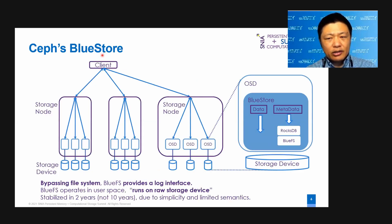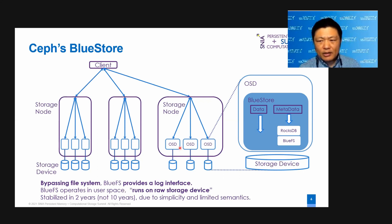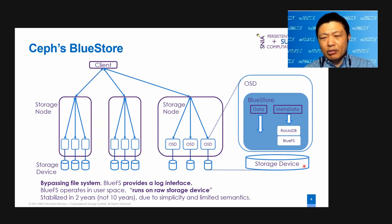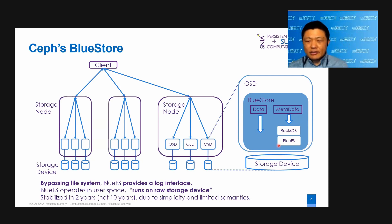Let's take a look at BlueStore. In Ceph, the client talks to multiple storage nodes. Each storage node is attached with multiple storage devices. Each device is served by an instance of OSD — OSD stands for Object Storage Daemon. With BlueStore, the OSD works directly on the raw storage device, bypassing the file system. The metadata is managed by RocksDB. RocksDB uses logs for storage abstraction, while the storage device provides a block interface. This is when BlueFS kicks in — BlueFS operates in user space, turning a raw device into a log interface. Bypassing the kernel file system, they claim twice the performance improvement.